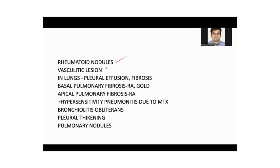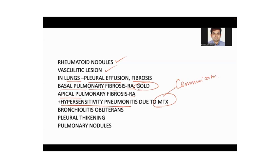You can find rheumatoid nodules and vasculitic lesions. In the lungs, you can find pleural effusion, basal pulmonary fibrosis — seen in both rheumatoid arthritis and with the old drug gold, which is not used nowadays — and apical pulmonary fibrosis can also be seen. Hypersensitivity pneumonitis due to methotrexate — this can come up in communication scenarios. Also bronchiolitis obliterans, pleural thickening, and pulmonary nodules.